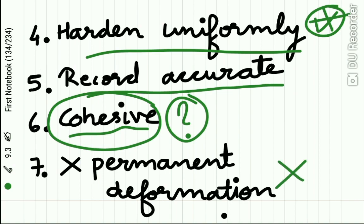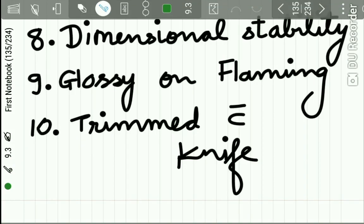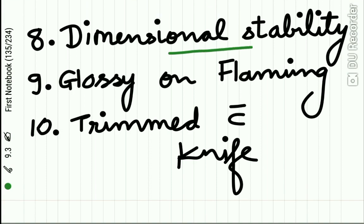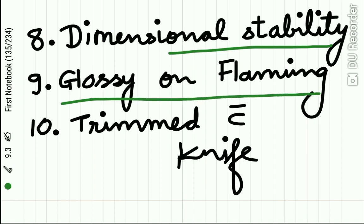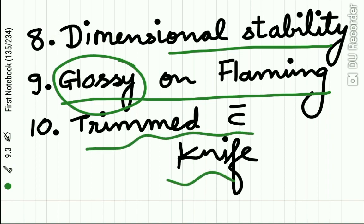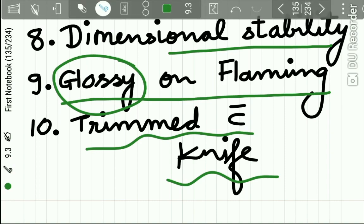The impression compound should not undergo permanent deformation when removed from the mouth. Dimensional stability is very important. It should show a glossy surface on flaming — when exposed to a flame, it should appear glossy. You should also be able to trim the impression made by impression compound with a knife, making it correctable. These are the requirements we need in impression compound.